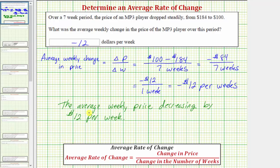Notice in this case, because we stated the average weekly price is decreasing, we did not include the negative. The negative indicates the average price is decreasing, so if we state the price is decreasing, we don't include the negative. It would not be correct to state the weekly price is decreasing by negative $12 per week.